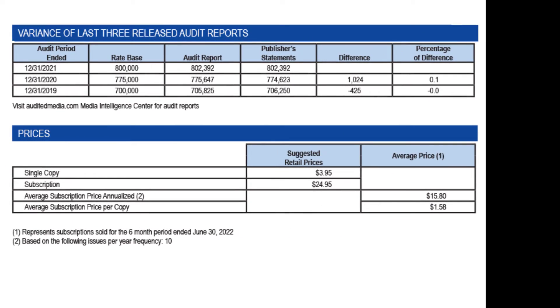The variance of the last three audit reports is a straightforward paragraph that shows any differences between the publisher's previously made claims and the results of the audit, with data for rate-based and calculations for the percent change.